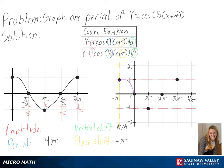And with that, we have graphed one period of y equals cosine of a half times x plus pi.